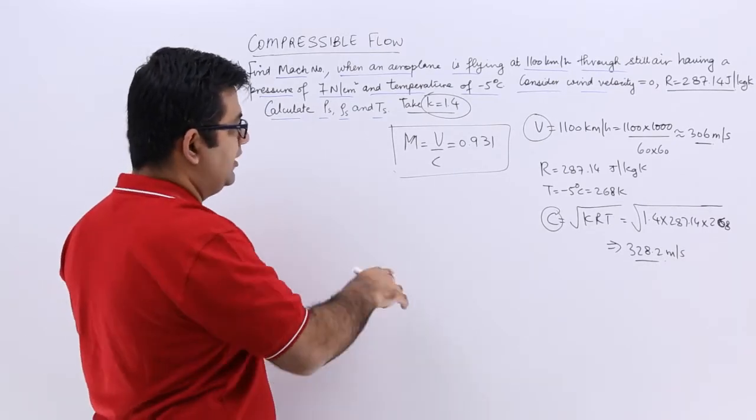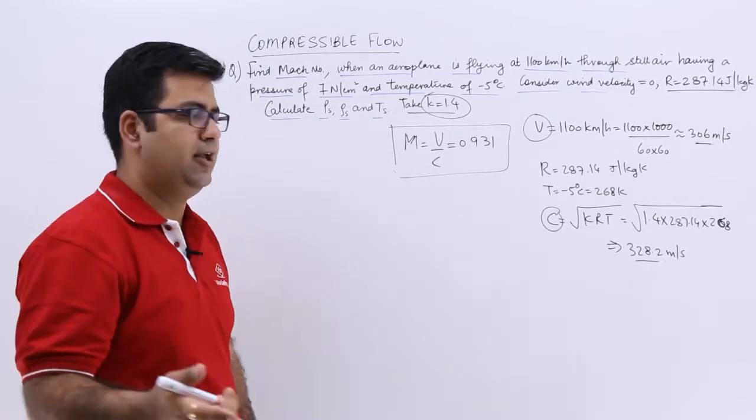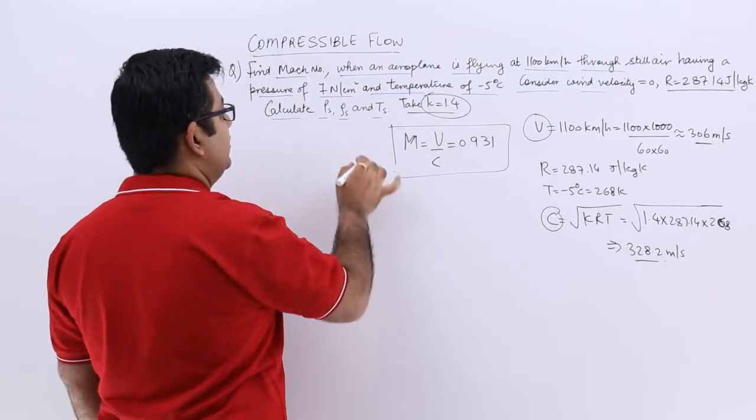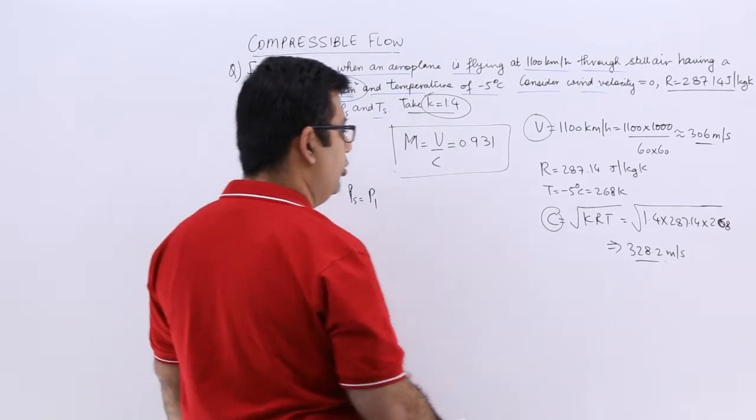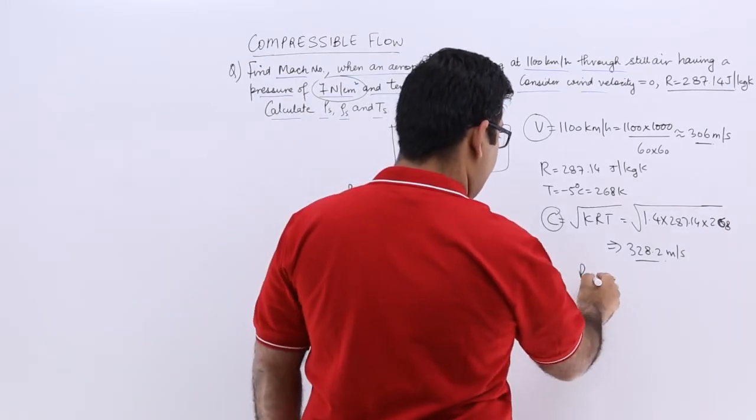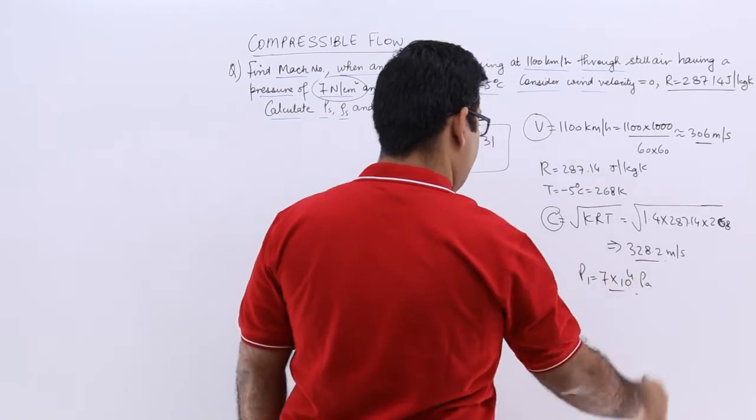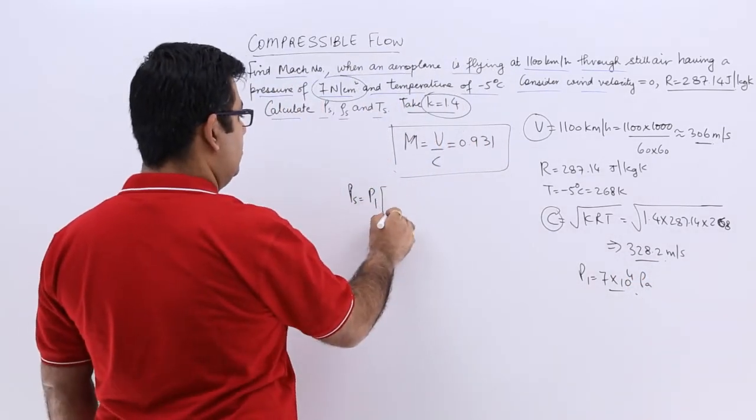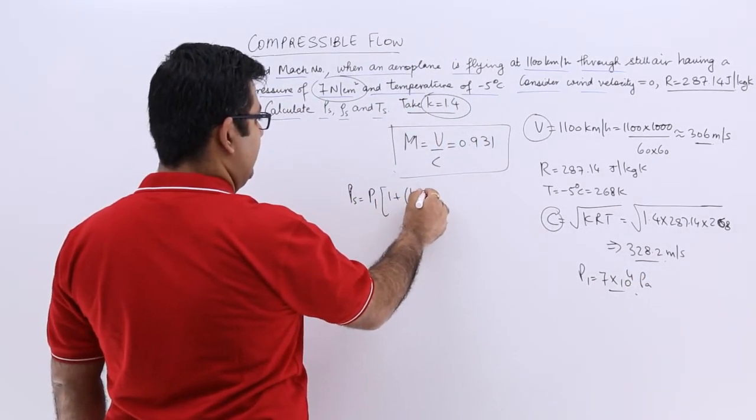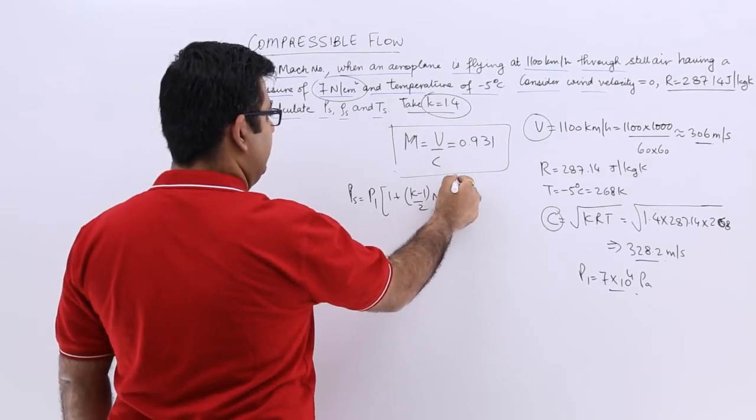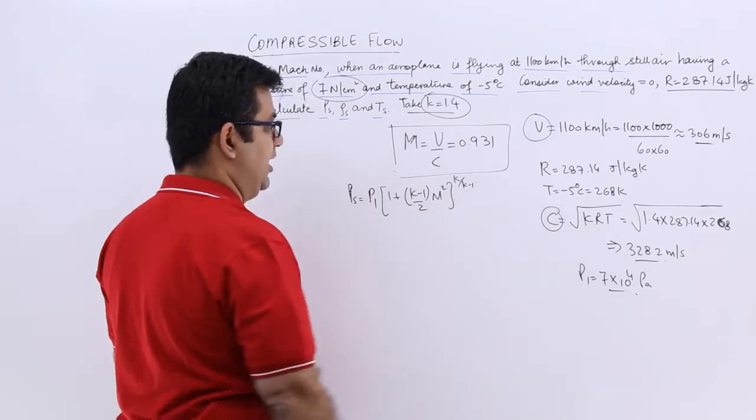So with Mach number in place, now we can start finding out the stagnation properties. So PS is P1, P1 is given to you as 7 newton per centimeter square, so this would be 7 into 10 to the power 4 pascals. So you will have P1 into 1 plus k minus 1 by 2 into m square to the power k upon k minus 1.